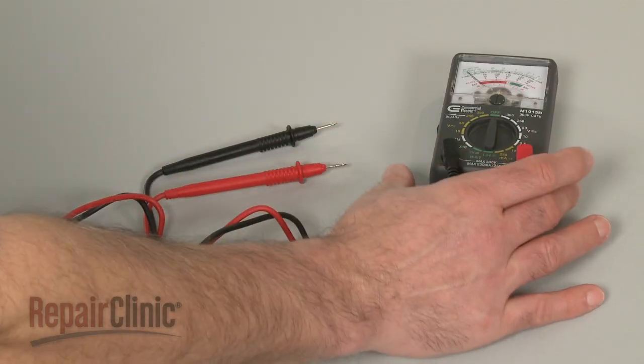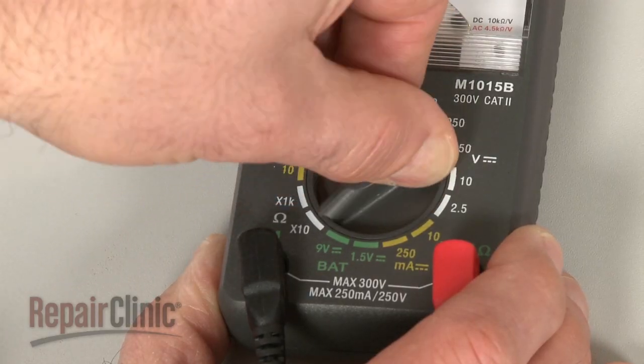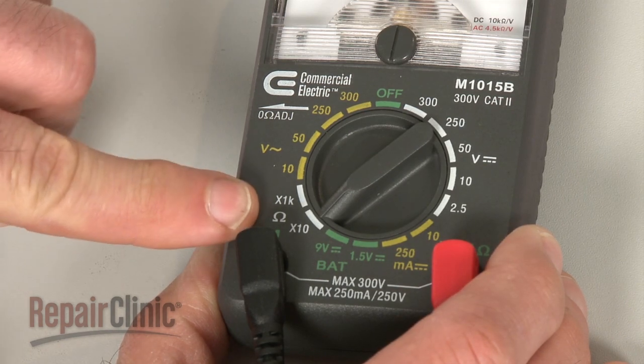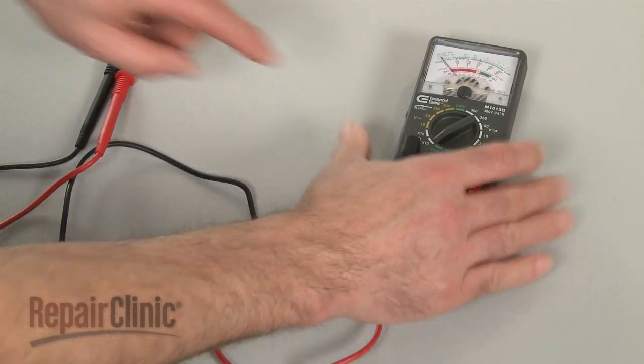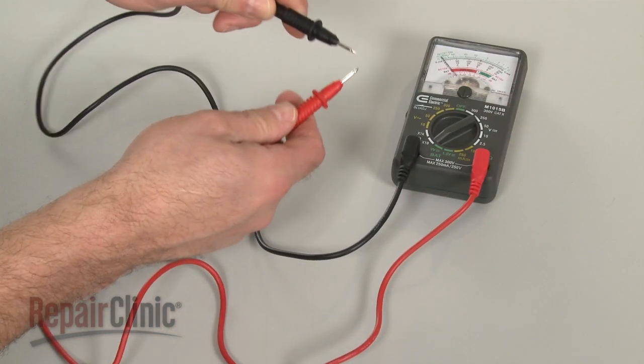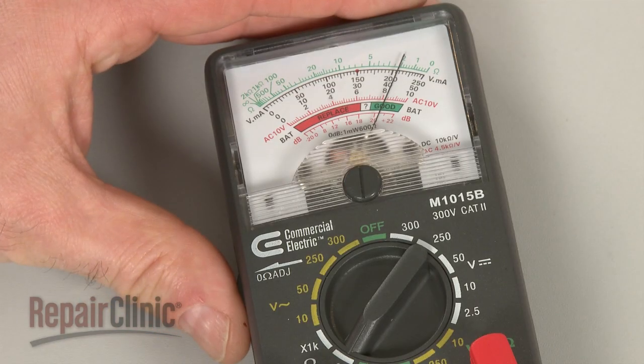When using an analog model, first rotate the range selection dial to the lowest setting for ohms of resistance. Then calibrate the meter by pinching the probes together while adjusting the needle to read zero.